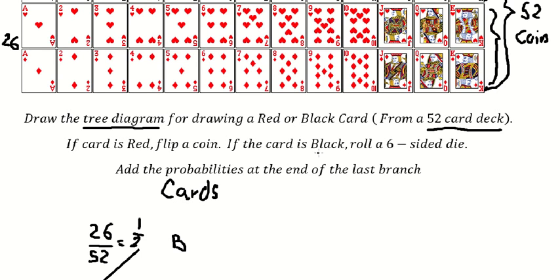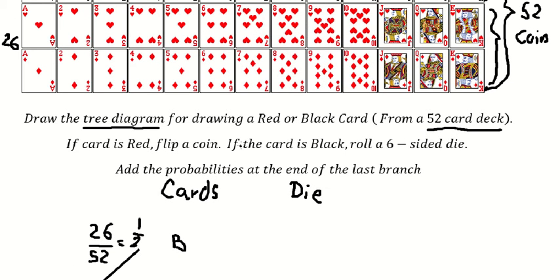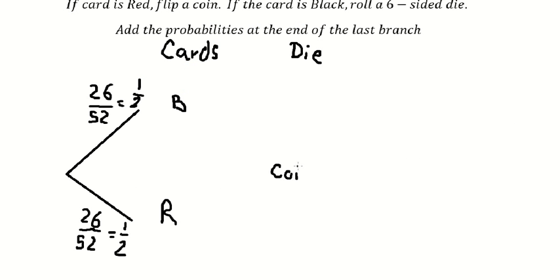The next one, if we have the black card, we need to roll the dice. That is about the dice in here. If this one is red, we need to flip the coin. So we put the coin in here.